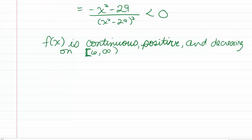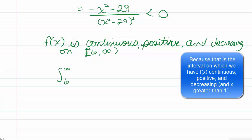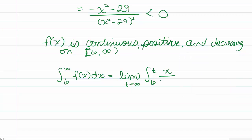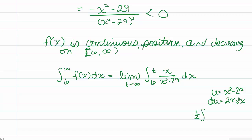We evaluate the integral from 6 to infinity of f of x dx, written as the limit as t goes to infinity of the integral from 6 to t of x over x squared minus 29 dx. We use a u-substitution with u equals x squared minus 29 and du equals 2x dx. This gives us the anti-derivative of one-half times one over u du, so the anti-derivative is one-half the natural log of the absolute value of x squared minus 29.